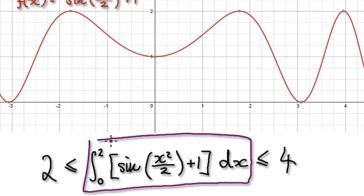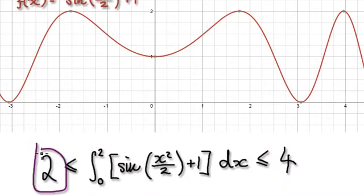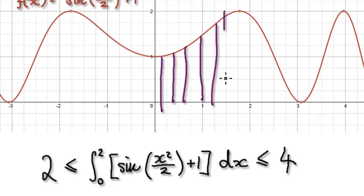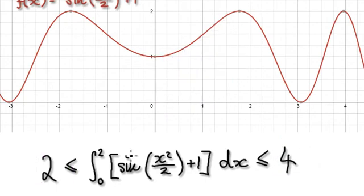So our true area is trapped between 2 and 4. You can increase the accuracy by splitting up into more segments. If you keep on splitting up, then these two bounds will become narrower and narrower, and you will get a more accurate answer.